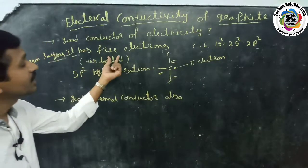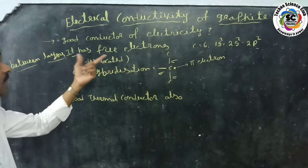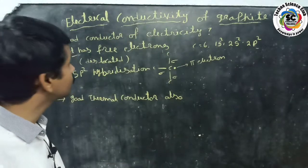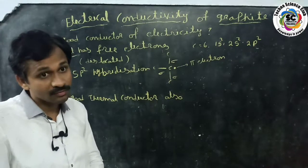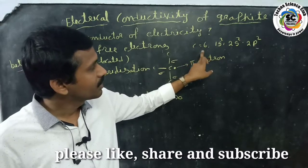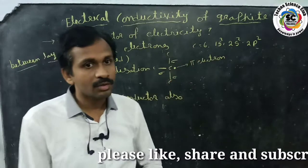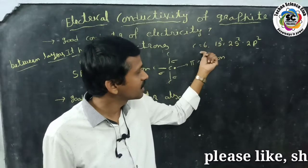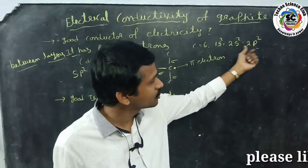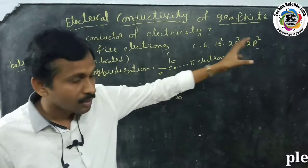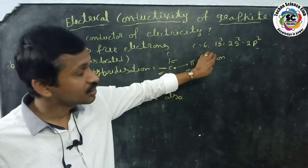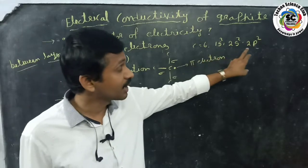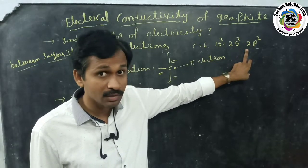Why is graphite a good conductor of electricity? Because it has free or delocalized electrons in between the layers of the graphite. Let's explain in depth. The atomic number of carbon is six, and the electronic configuration of carbon is 1s² 2s² 2p².